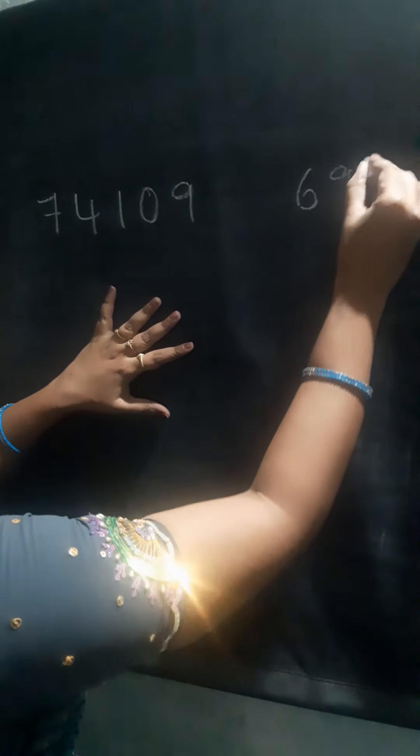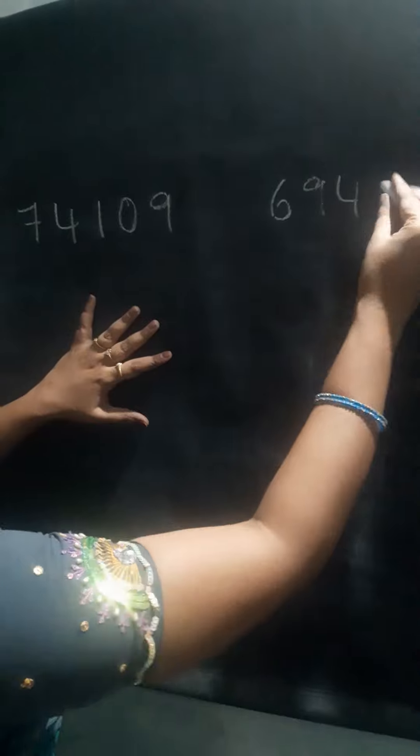I will explain a few examples, children, on how to compare numbers. I am taking two numbers. What is the first number? Read it yourself, children. First number: 74109. Coming to the second number, read out children: 6940. See how we are going to compare these two numbers. The first step is to count the number of digits for these two numbers.